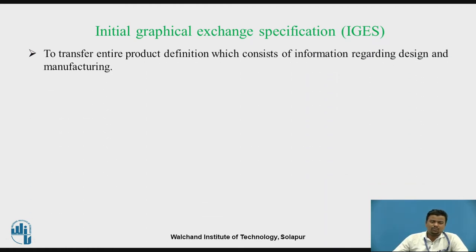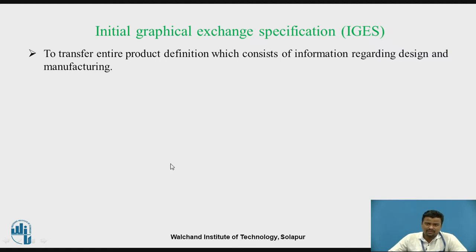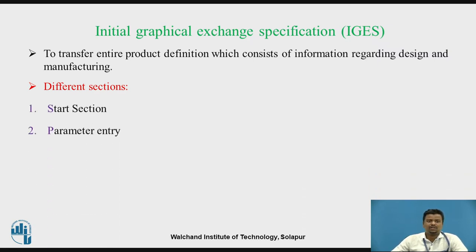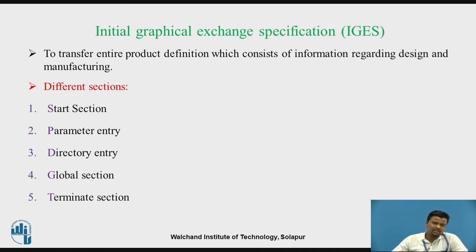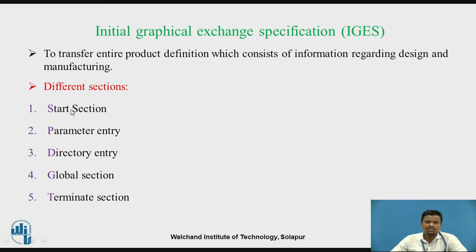What is meant by Initial Graphic Exchange Specification? To transfer the entire product definition regarding design and manufacturing, there are different types of sections. There is a Start section, a Parameter section, a Directory entry, a Global section, and a Terminal section. I always remember these as SPDGT. I have highlighted the initial letters of the IGES sections.